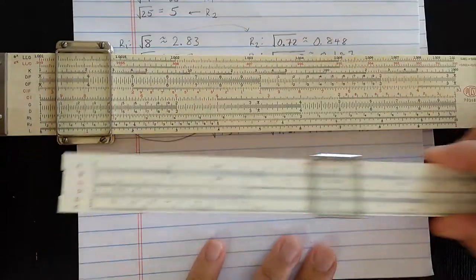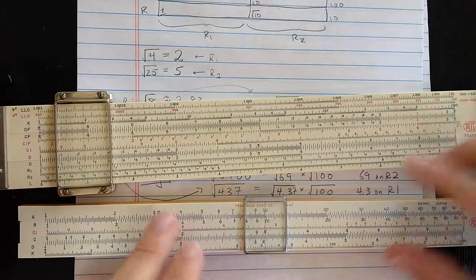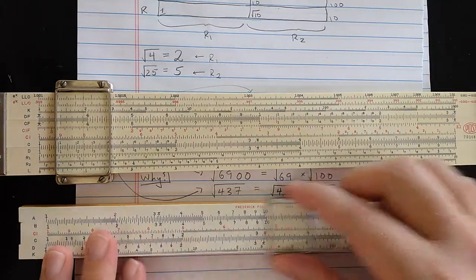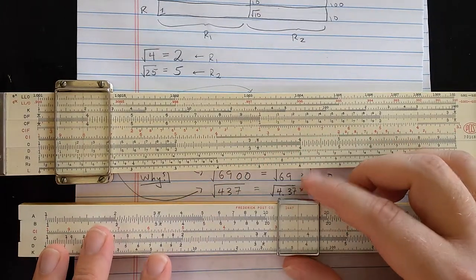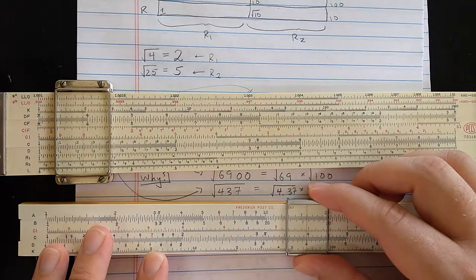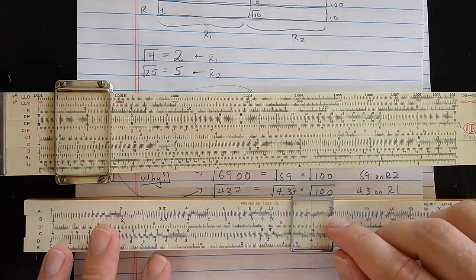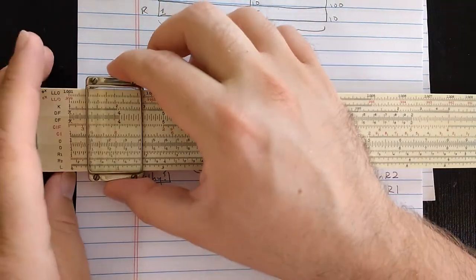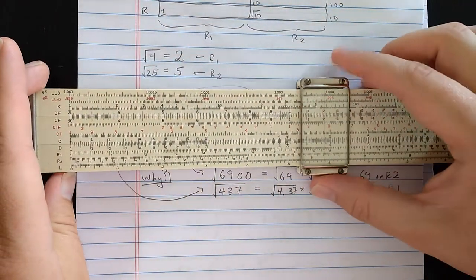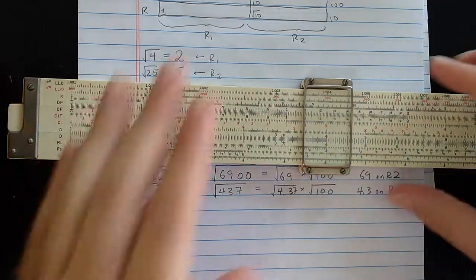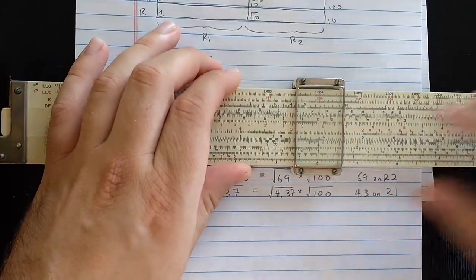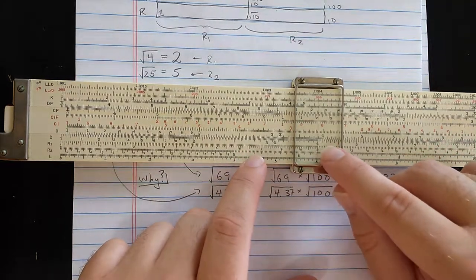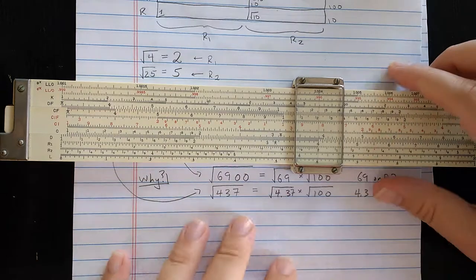So what that means is, unlike on the Mannheim slide roll where I set something on C or D, let's set here 4. And I read the square on the A scale, 16. Instead of that, if I was to set 4 on C or D, if it's closed, let's set it on D. Then what I read on R1 is 2, the square root of 4.